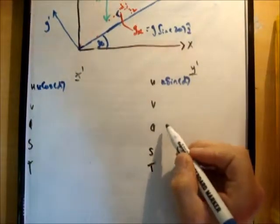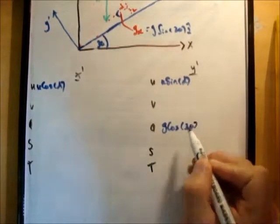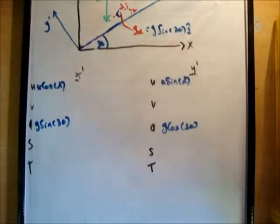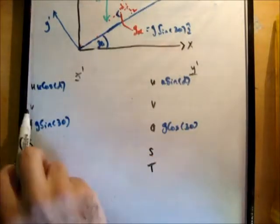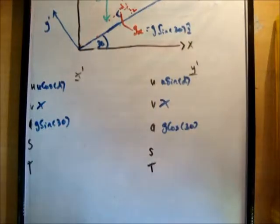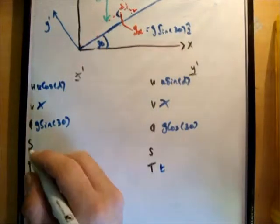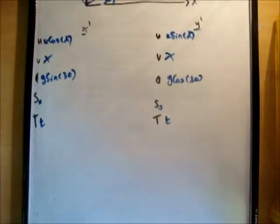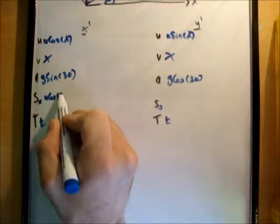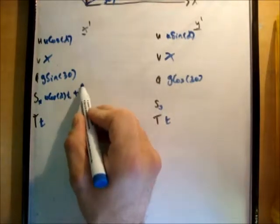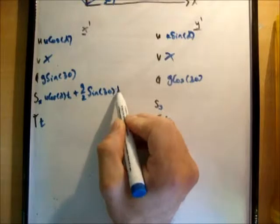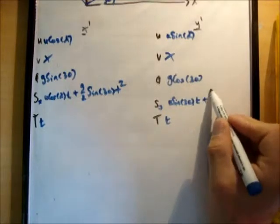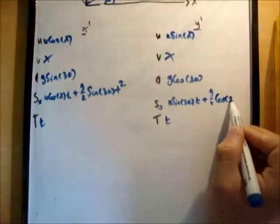So plug these values in here. We get g times the cosine of 30 and g times the sine of 30 like so. The next thing you need to do is get the velocity vectors, but to be honest we're not going to use them so we're not going to actually work them out. The time for both is going to be t. The next thing you need to do is get s sub x and s sub y. So we're going to use the fact that s is equal to ut plus a half a t squared. So here it's going to be u cos alpha t plus g over 2 sine of 30 t squared. And here it's going to be u sine of alpha t plus g over 2 cos 30 t squared.